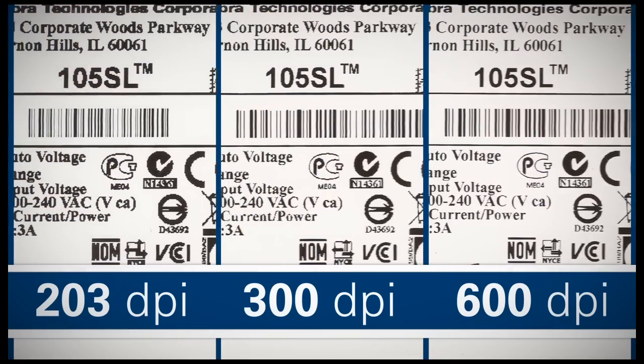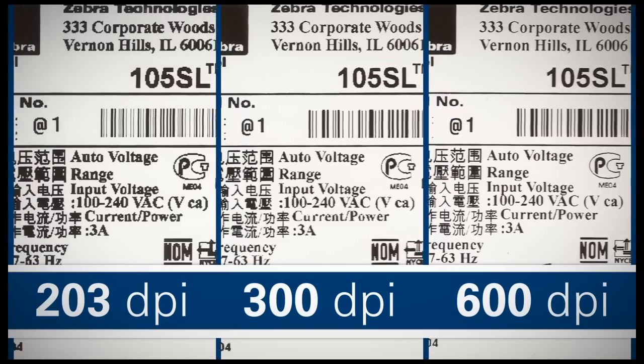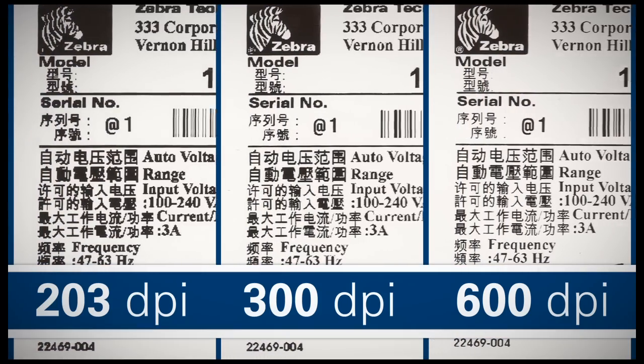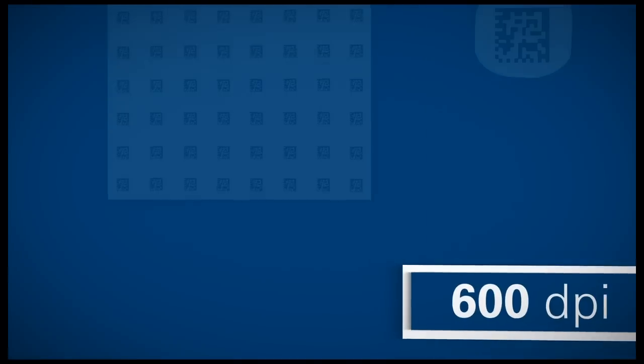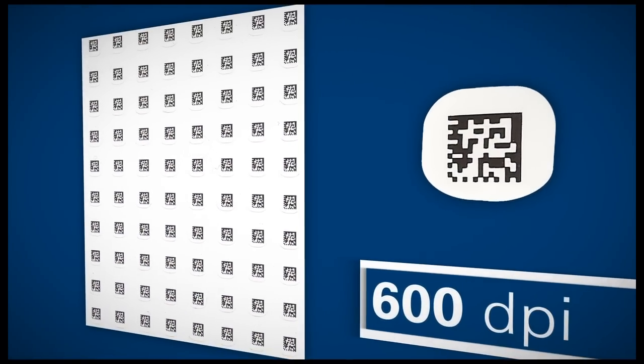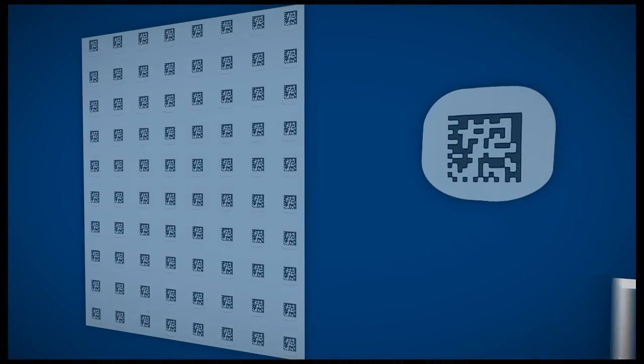600 dpi is also required when printing Asian fonts less than 10 points. 2D barcodes smaller than 0.3 inches by 0.3 inches require a 600 dpi printer to ensure they are scannable.